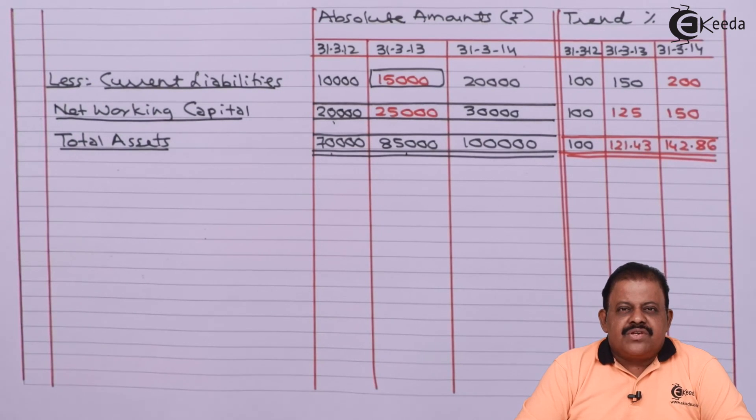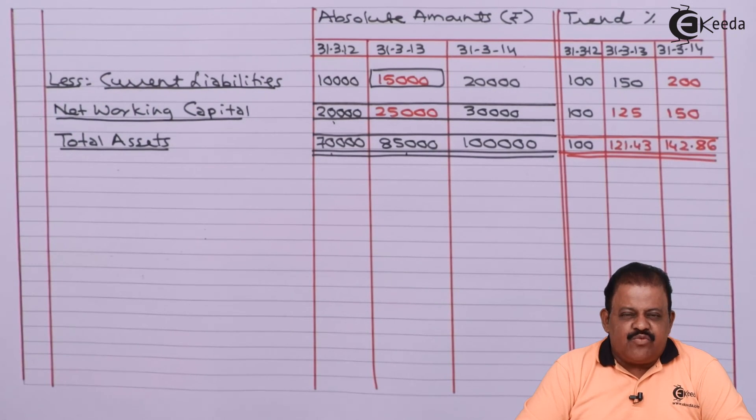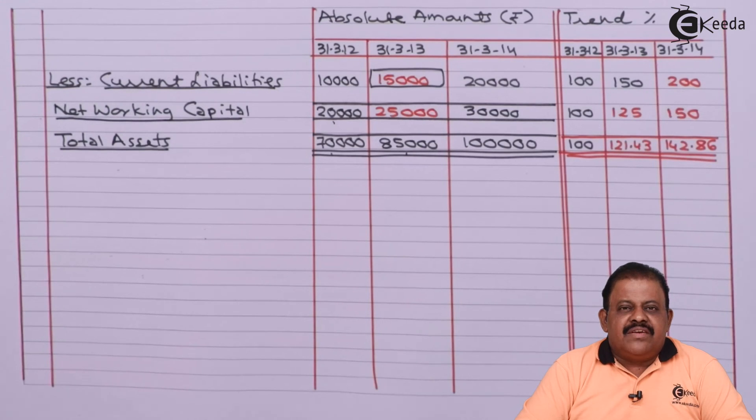In this question, we learned how to calculate missing information based on given information in a trend balance sheet.